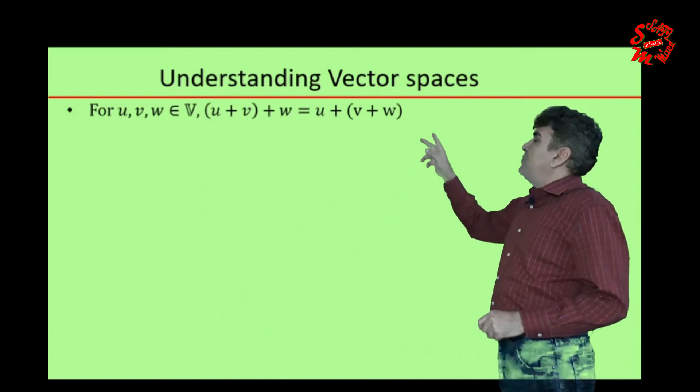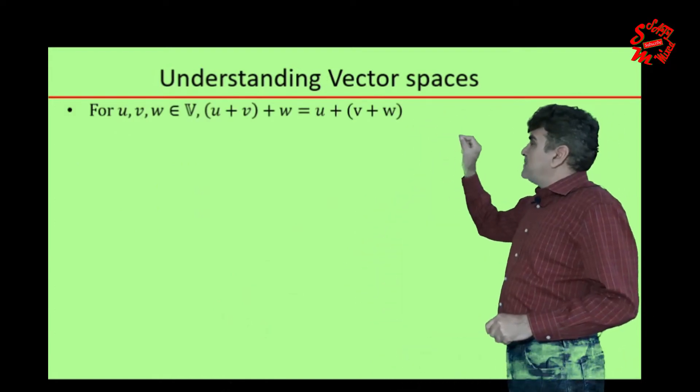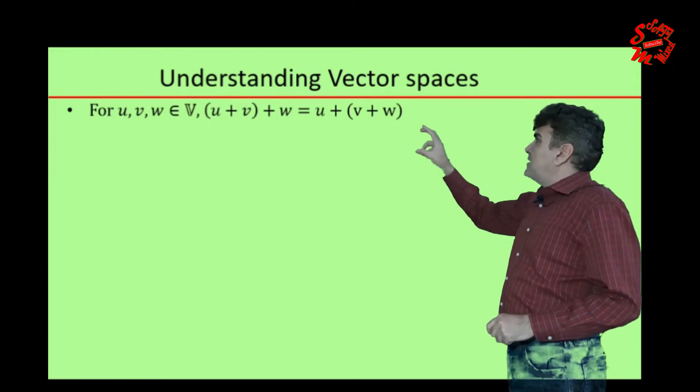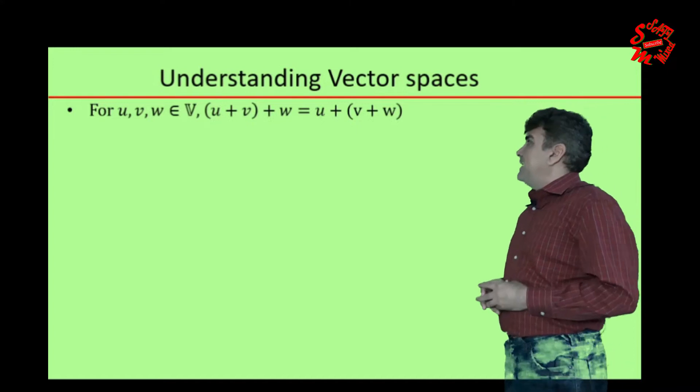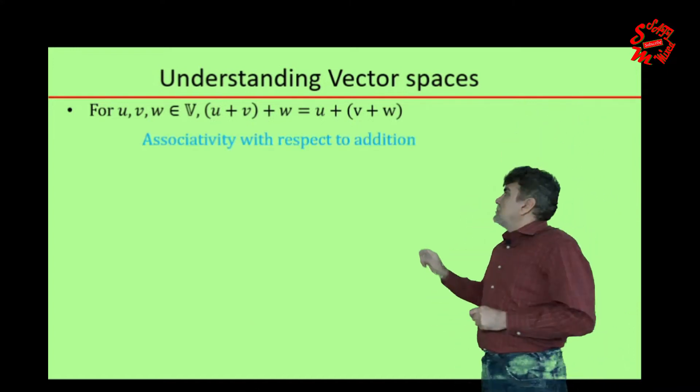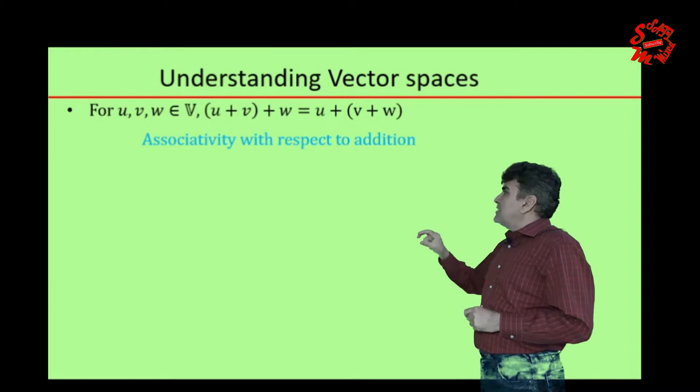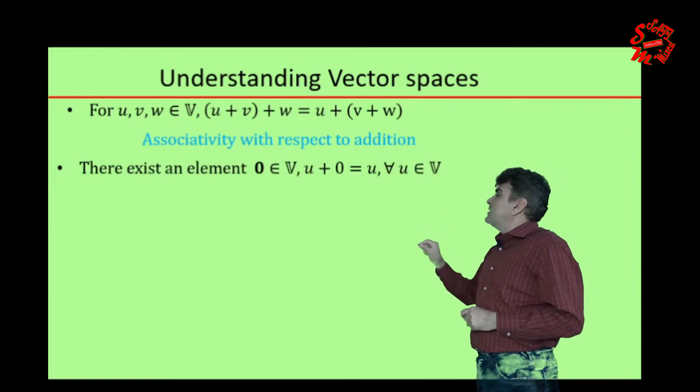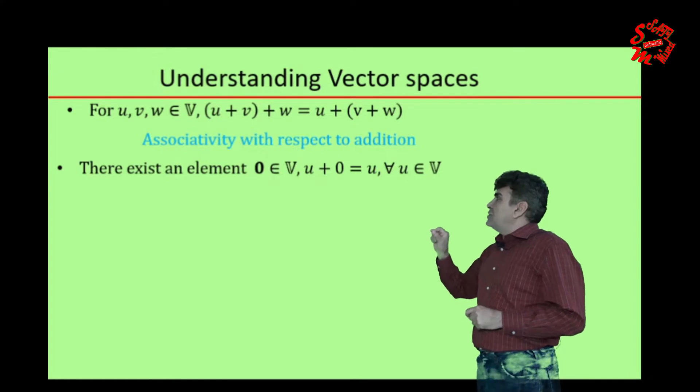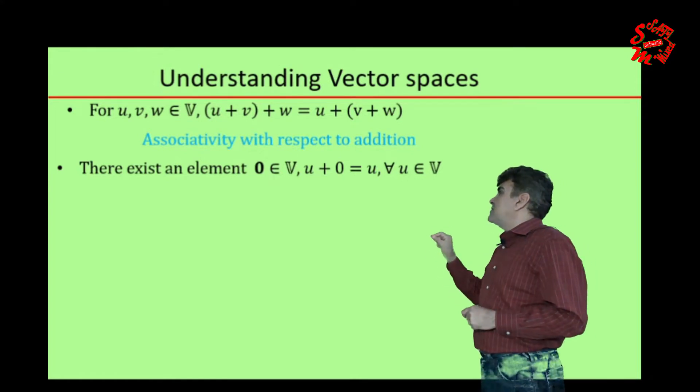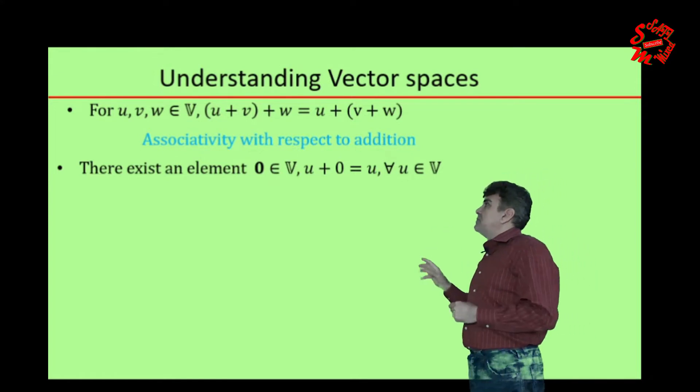For u, v, w belonging to space V, it obeys the associative property with respect to addition. There exists an element 0 belonging to V such that if it is added to any element U, it reproduces the same element which belongs to the space V.